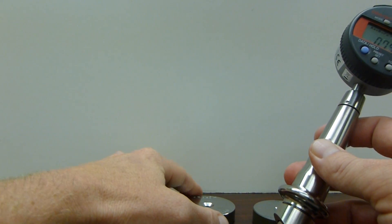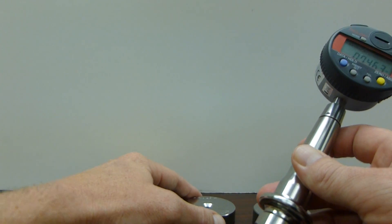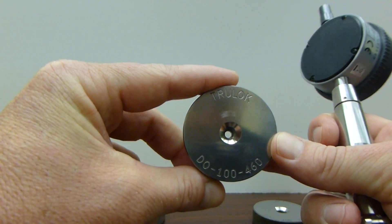Our gauge comes equipped with a setting block at the nominal value to calibrate this gauge. In this case, it is a DO100-460.